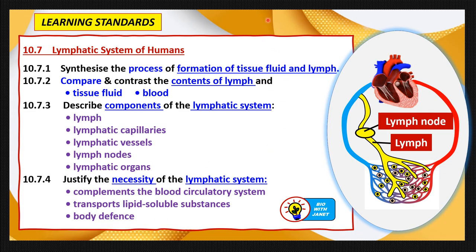The learning standards for this lesson are as follows: 10.7 lymphatic system of humans. Firstly, after this lesson, we should be able to synthesize the process of formation of two types of fluids, tissue fluid and lymph. Secondly, compare and contrast the contents of lymph and tissue fluid, or compare and contrast the contents of lymph with blood. Number three, describe the components of the lymphatic system, namely lymph, lymphatic capillaries, lymphatic vessels, lymph nodes and lymphatic organs. And fourthly, justify the necessity of the lymphatic system: to complement the blood circulatory system, to transport lipid soluble substances, and to carry out body defense.